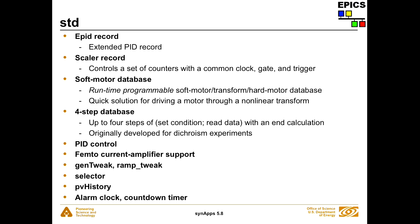The STD module used to be all of Synapse — everything was in there — and then we started pulling stuff out when it became unwieldy and packaging it as separate modules. The stuff that hasn't been pulled out yet is in STD: PID loop support, the scalar record, another soft motor database intended to be programmed at runtime, a four-step database for dichroism experiments (set magnetic field one direction, take data, set it the other direction, take data, then compute A minus B over A plus B), support for femto current amplifiers, and general utility databases for PV history, alarm clock, countdown timer, and other generally useful things.